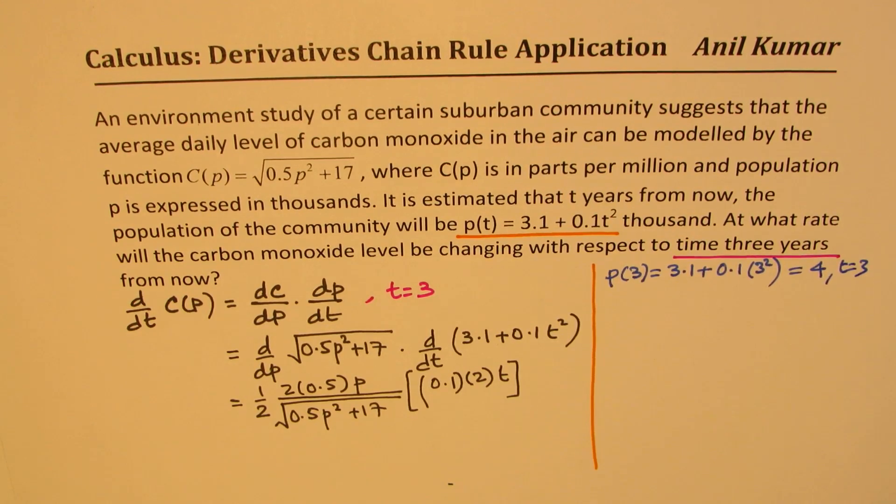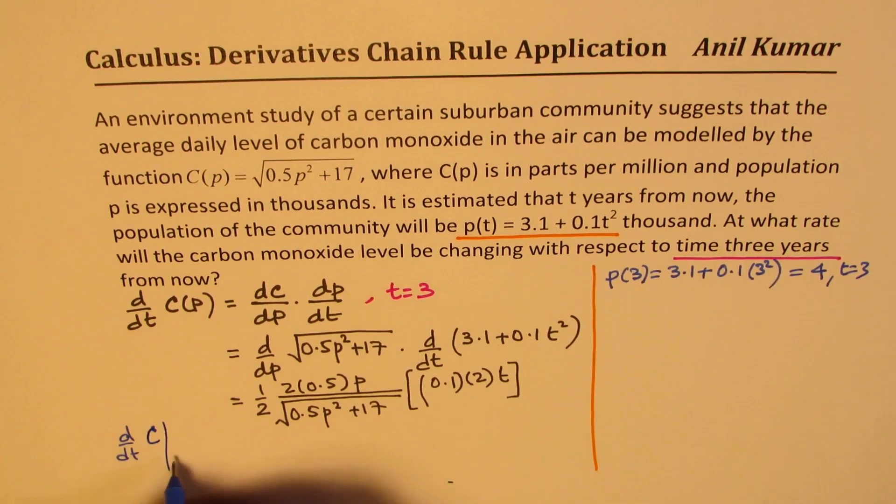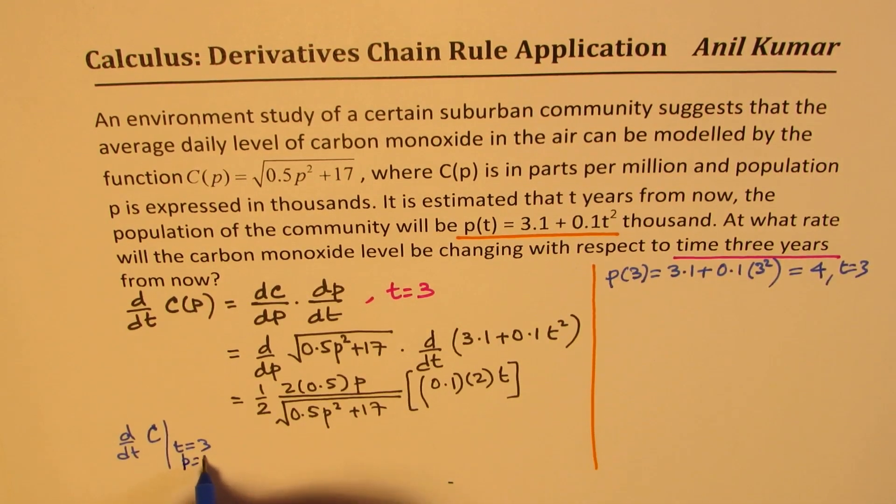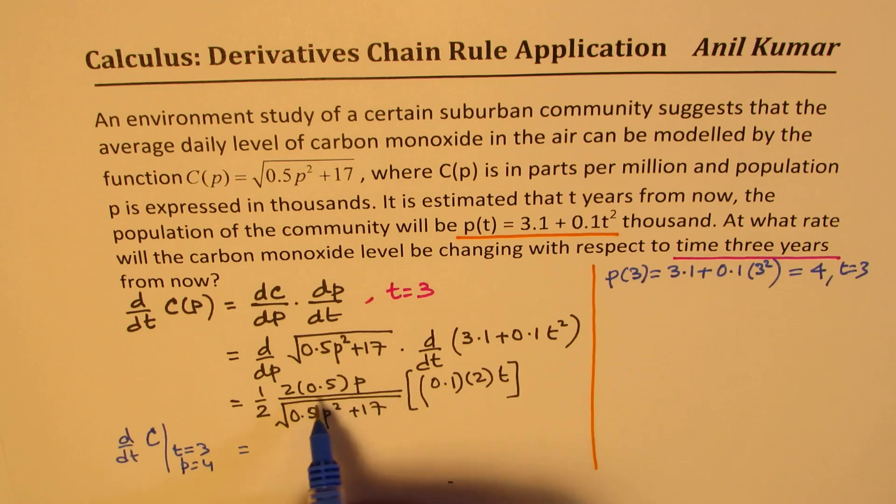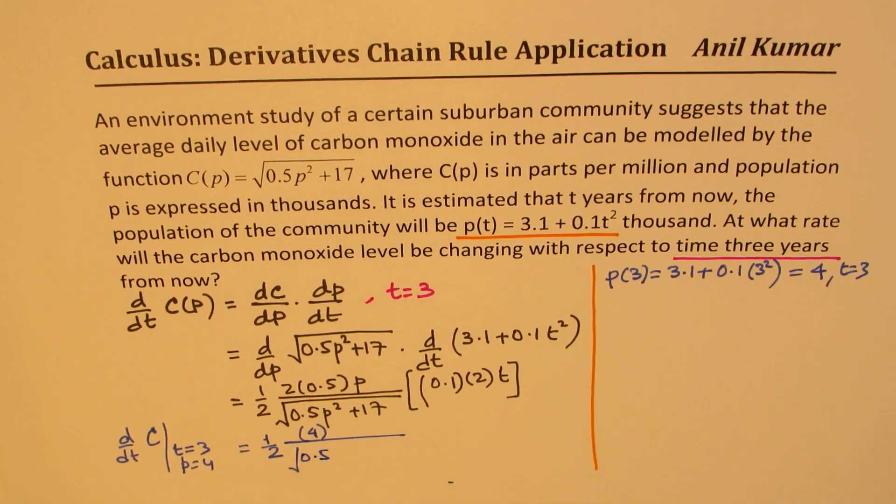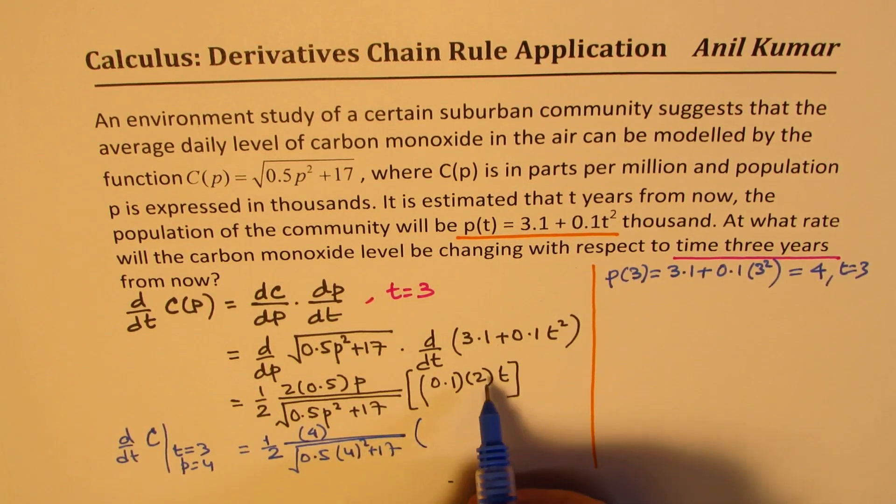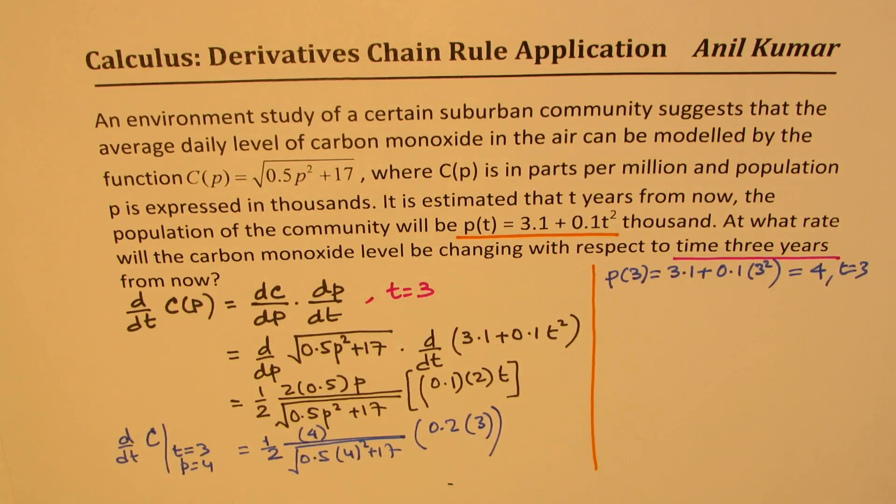So I think we have all these values. So we can now find the rate of change of carbon monoxide level. So we can write d/dt of carbon monoxide when t = 3. At this time, we also see that the population in thousands is 4. So we substitute these values. You can simplify this a bit. 2 times half is 1. So we have half here and that is 1. So we're left with the value of p, which is 4 in the numerator, divided by square root of 0.5 × 4² + 17. And here we have 0.2 times t, which is 3.